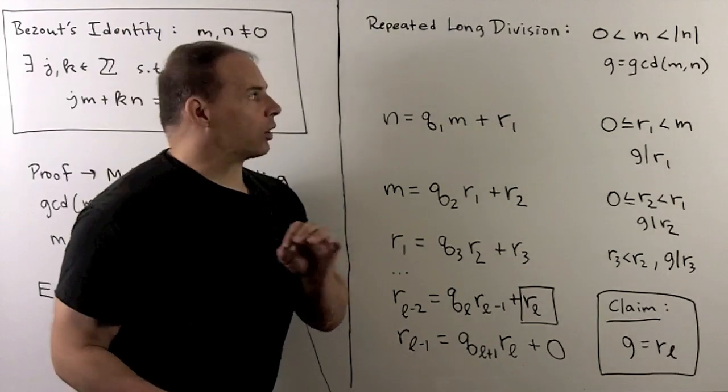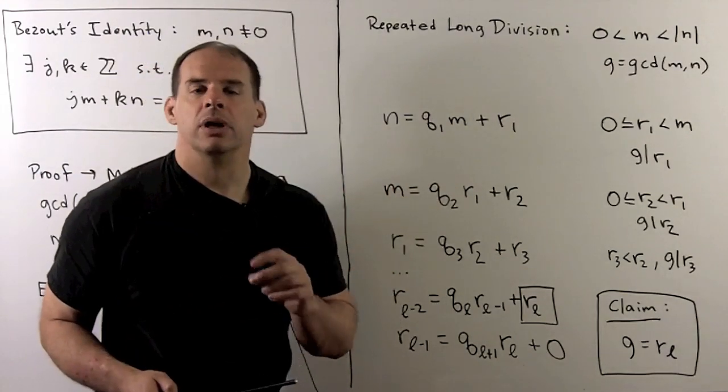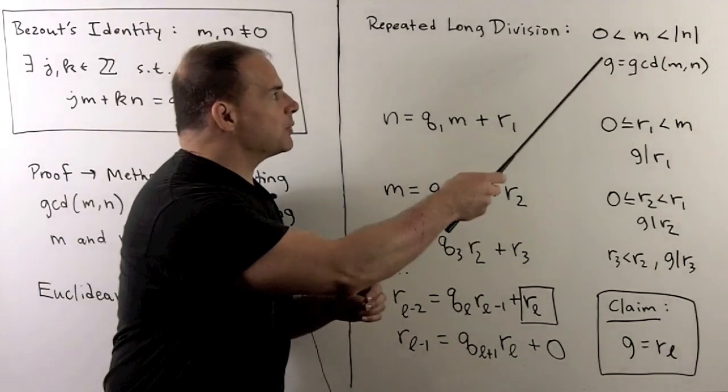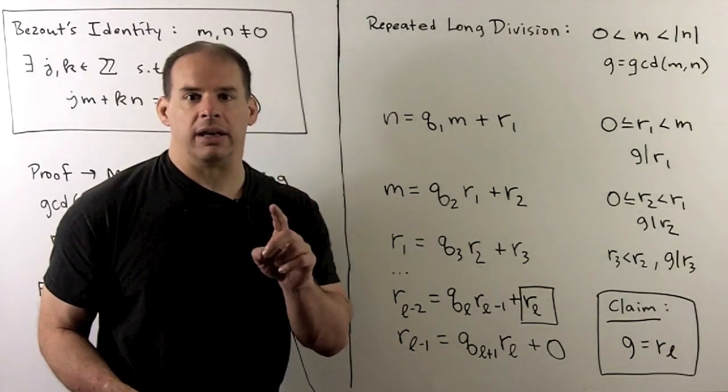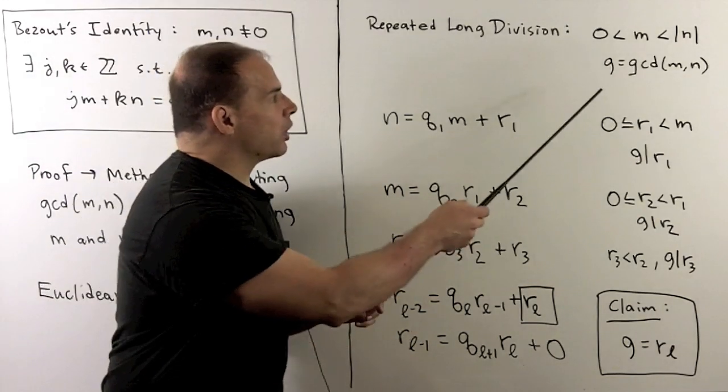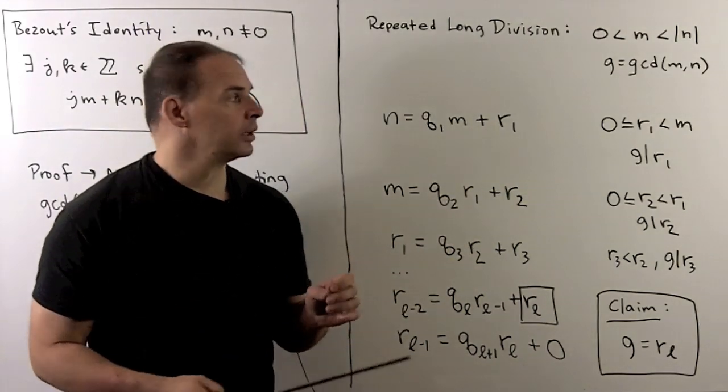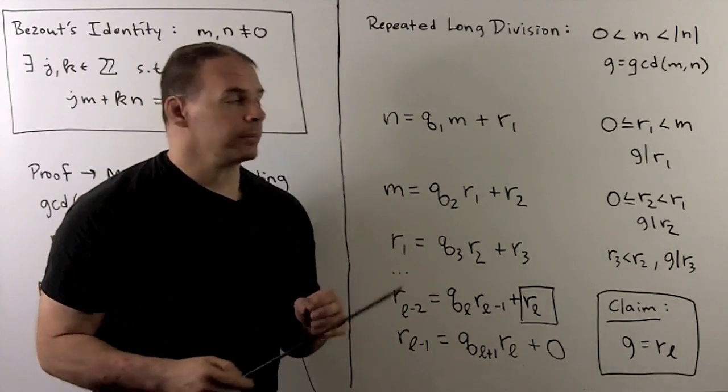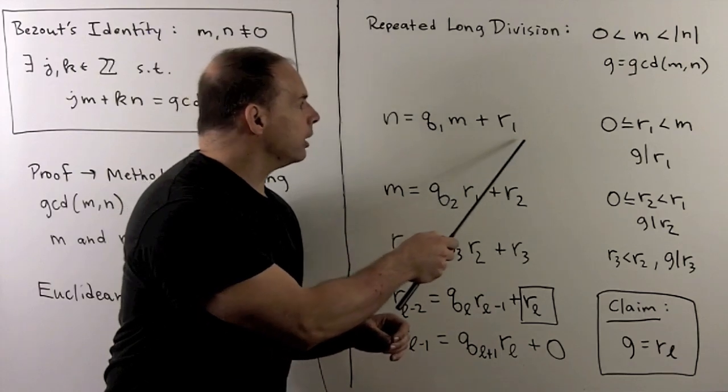Now, for the Euclidean algorithm, what we'll do is repeated long division. So, assumptions we'll start with. I'll assume that m is positive and strictly less than the absolute value of n. For shorthand, I'll call the greatest common divisor of m and n, g. So, we'll start with long division.